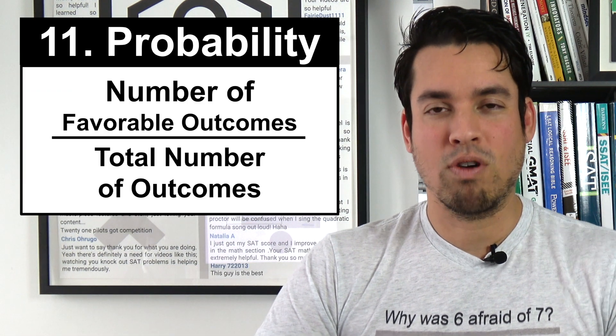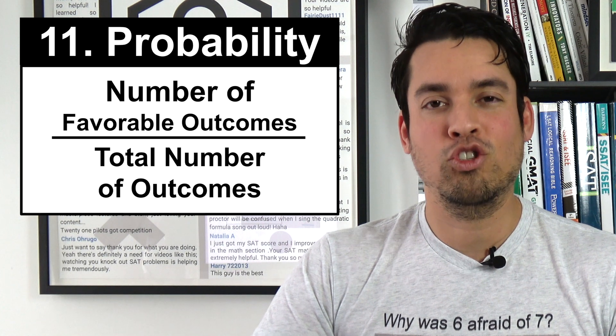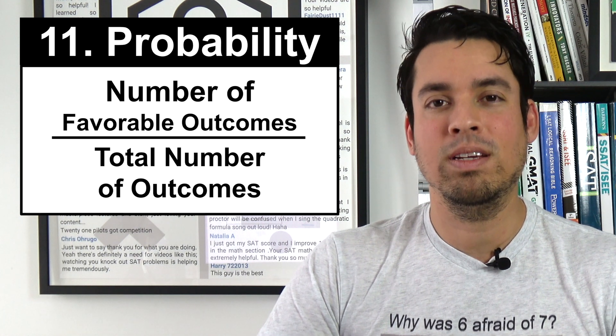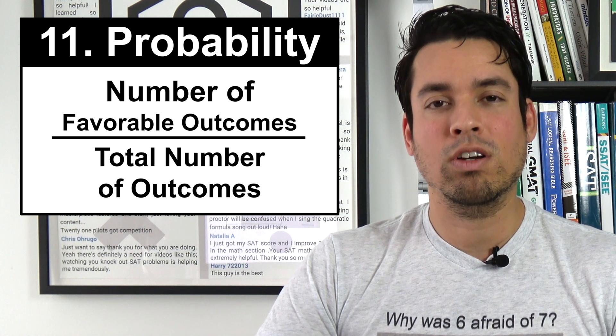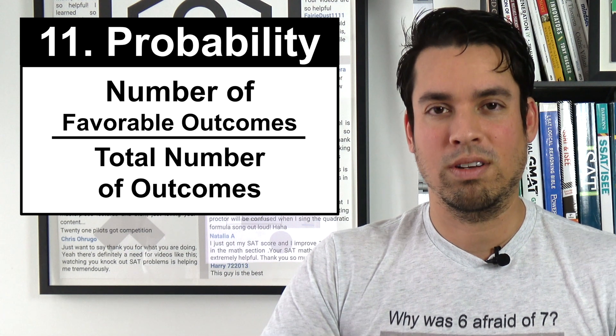Next on the list is probability, which is a very straightforward formula. It is simply the number of favorable outcomes over the total number of outcomes.